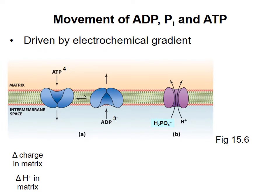But for movement of phosphate, the net change in charge in the matrix is zero, because the phosphate is negatively charged and the proton is positively charged. So of these two processes, only the exchange of ATP and ADP uses the electrical potential part of the electrochemical gradient.